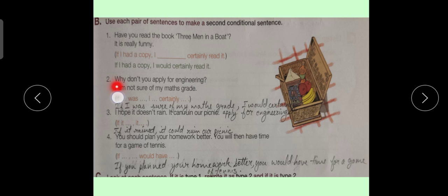Sentence number 2. Why don't you apply for engineering? I am not sure of my maths grade. If I was, I certainly. Here, this is a hint which is given to us. We have to use this hint and make another second conditional sentence. If I was sure of my maths grade, I would certainly apply for engineering.